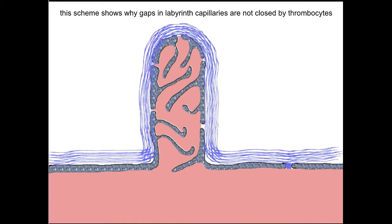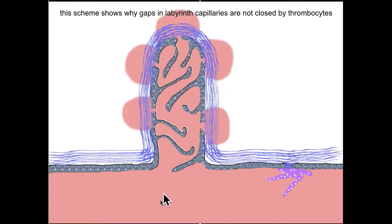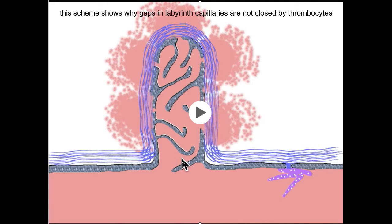In this scheme I try to explain why labyrinth capillaries are not closed by thrombocytes. If there is a gap within the endothelium, that will be immediately closed by thrombocytes due to activation by extracellular matrix compounds. The leakages inside the labyrinth capillaries, here indicated by arrowheads, cannot be closed by thrombocytes because the thrombocytes cannot enter them, and therefore the leakage cannot be closed.